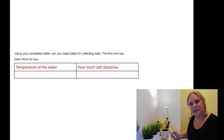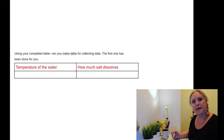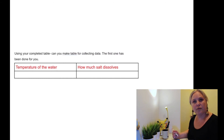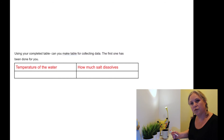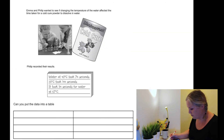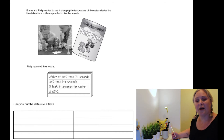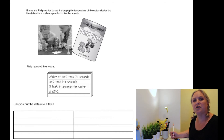Here we've got a table from the example we just looked at. Can you complete the other tables from the other examples on the worksheet? We've got temperature of the water — the independent variable — on the left, and how much salt dissolves — the dependent variable — on the right. Now let's have a look at a question based on tables and data.